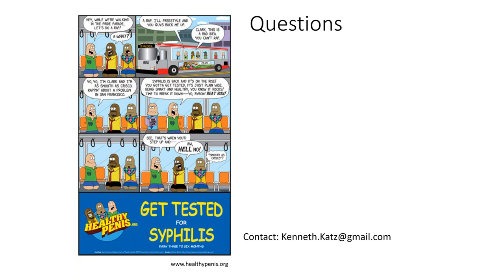Question: Can a secondary syphilis body rash be on the back, or does it have to be on the abdomen and chest? With syphilis, the answer is it can do whatever it wants. It would be unusual for it to be only on the back and not on the abdomen and chest, but I would not say that rules it out.